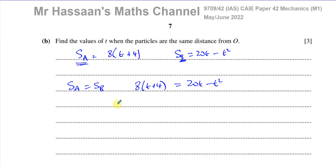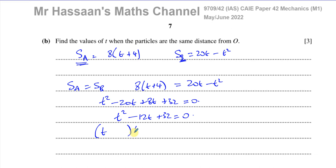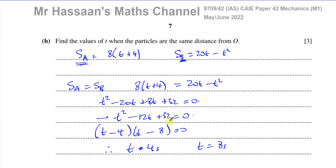Adding T squared to both sides and subtracting 20T, then expanding the bracket: 8T plus 32 equals zero, giving T squared minus 12T plus 32 equals zero. Factorizing: (T minus 4)(T minus 8) equals zero, so T equals 4 seconds and T equals 8 seconds. Note: you must show the factorization step to get the method marks.